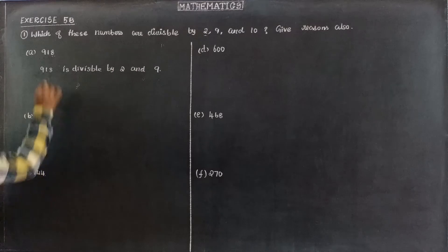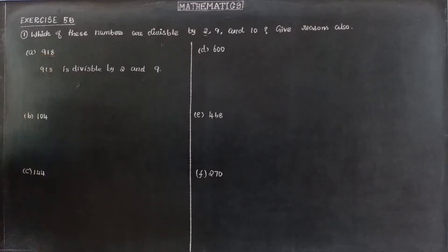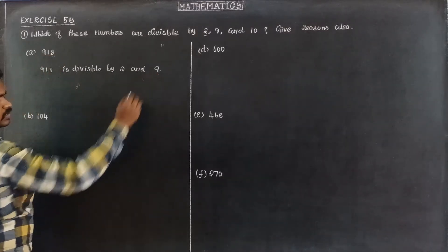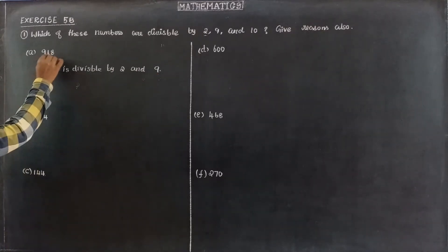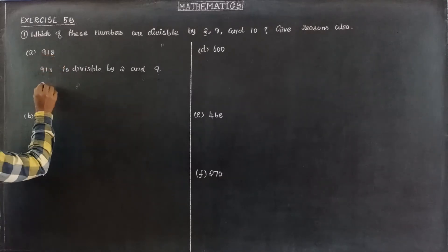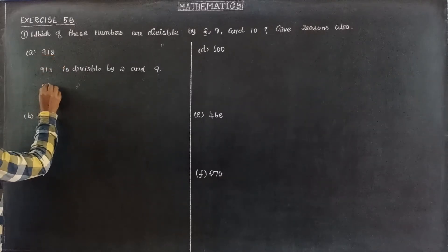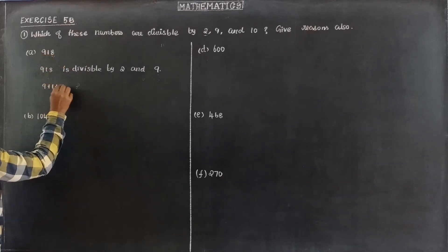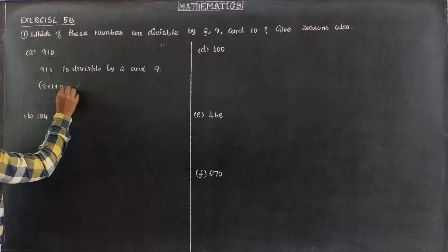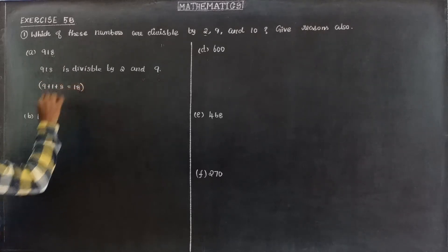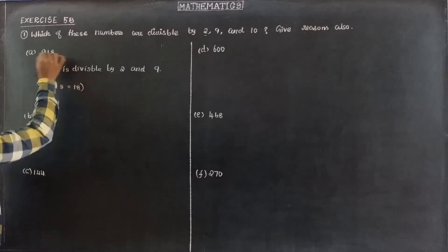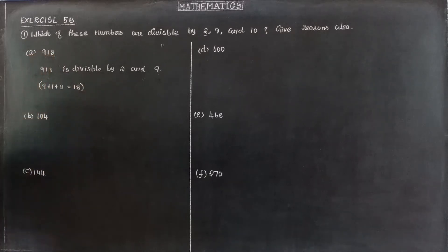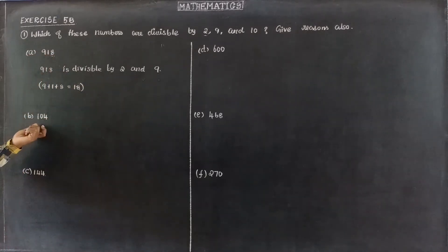The reason is: 918 is an even number, so it is divisible by 2. The sum of the digits 9 plus 1 plus 8 equals 18, and 18 is divisible by 9, so the number is also divisible by 9.